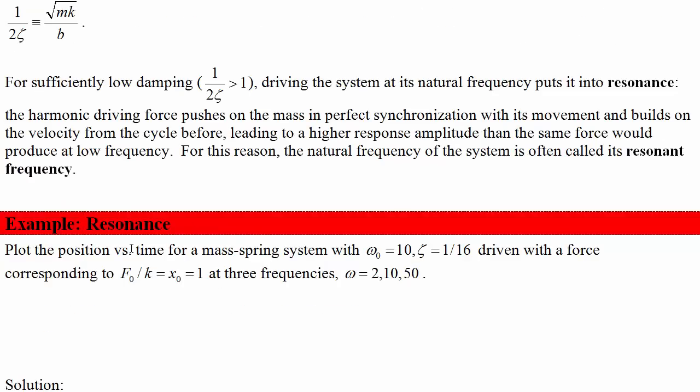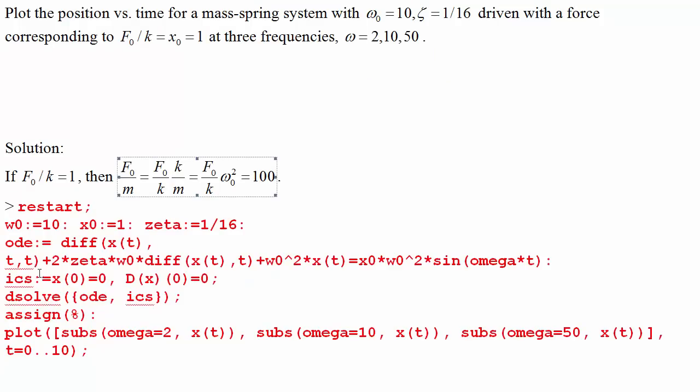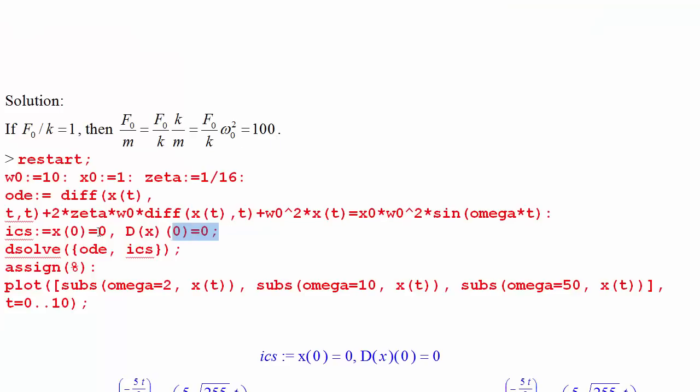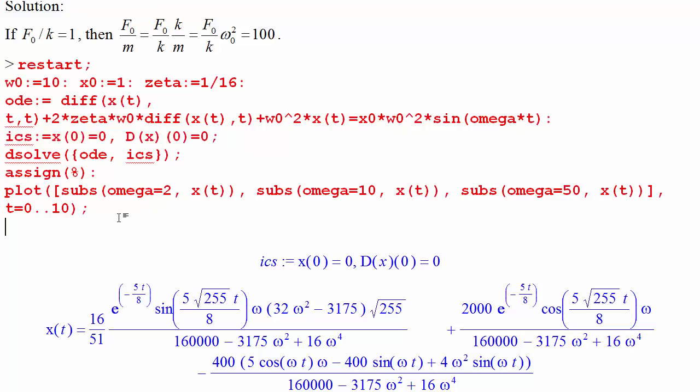Let's do an example of resonance. Plot the position versus time for a mass spring system with this frequency, this damping, driven with a force corresponding to F₀/k = 1 at three different frequencies. Suppose we've got a driving force at ω = 2, 10, and 50, and plot these all together. Let's use Maple to solve it. First, we need to figure out what F₀/m is. If F₀/k is 1, then F₀/m must be 1 times ω₀², or in this case 100. Substituting in our numbers and writing the differential equation in terms of ω₀ and ζ, we can substitute in our initial condition. Let's just say that it started off at 0.